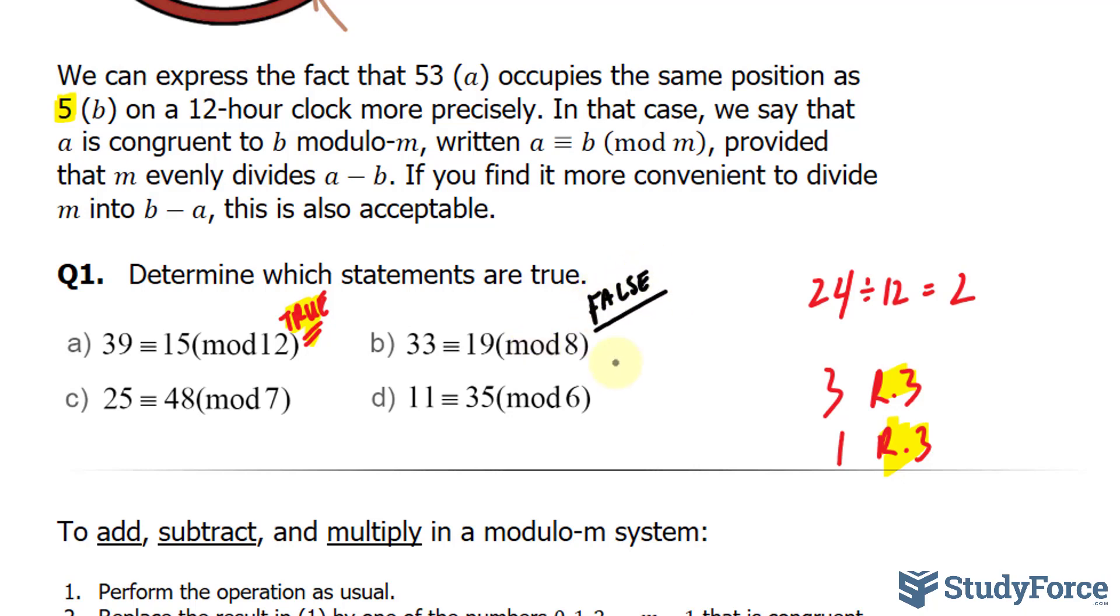For question C, is 25 congruent with 48? Well, I'll take 48 minus 25. That should give us 23. 23 does not divide into 7, so this is also false.